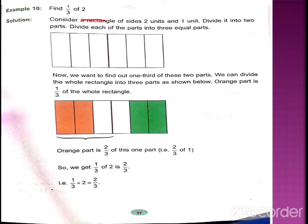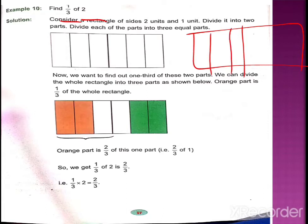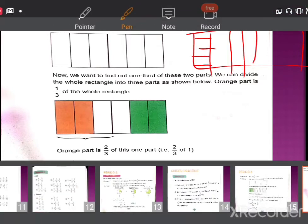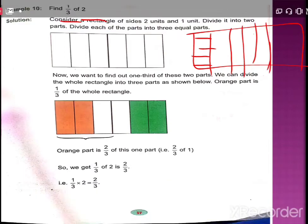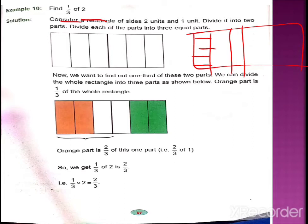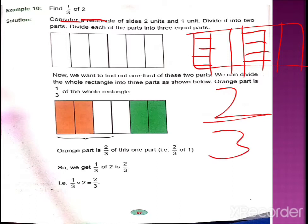One more example: first we take two parts, then each part is divided into three equal parts to show one-third. Hamne three parts mein harik part ko represent kiya, aur one-third ka matlab — one-third of each of the two parts. So one-third of part one plus one-third of part two gives two by three. That means one-third plus one-third equals two-thirds.